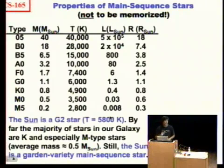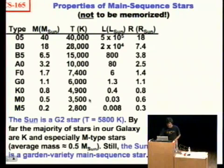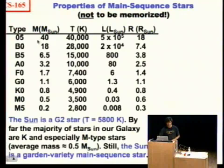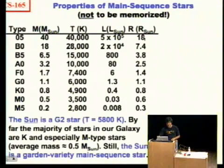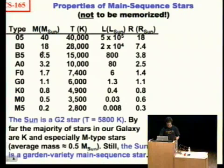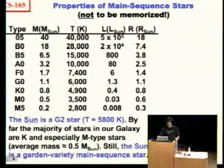Here's a table of main-sequence stars and their properties. Do not memorize this table, but look at the trends. As you go from O through M or even L, the mass goes down in units of solar masses — O-type stars are 40, M-type stars might be a fifth. The temperature goes from hot to cool, and the radius goes from big to small. But all these columns don't vary a huge amount — maybe a factor of a couple hundred, or around 17 to 50 from one extreme to another.